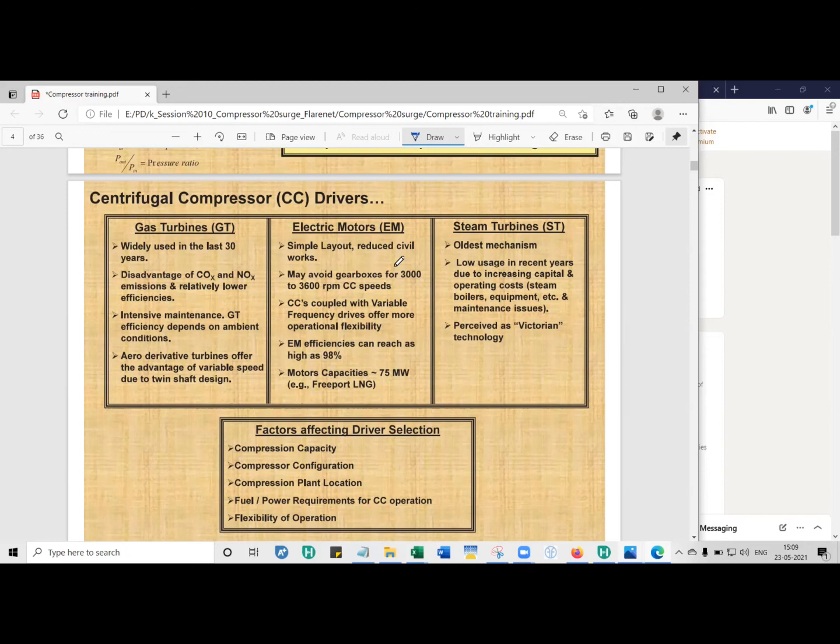Let's say it's 50 Hertz and 4-pole motor. 120 into 50 by 4 comes to 3000 RPM. The US is the only country which uses 60 Hertz. 120 into 60 by 4 gives you 3600 RPM. But does this mean that the gas compressor can run only at 3000 RPM? No, you can run it at higher speeds by using a gearbox.